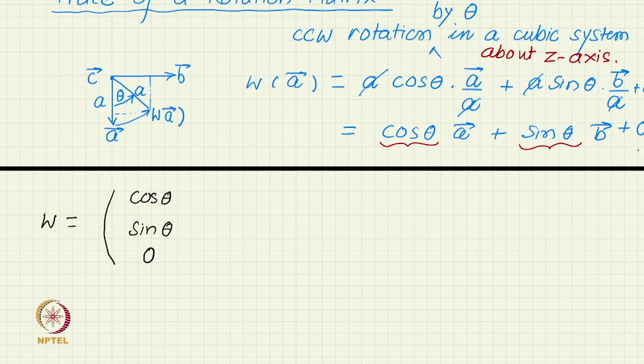What about W(B)? Now this will go theta this way, B is also of length A. The x component is now on the negative side and that component will be minus sin theta.